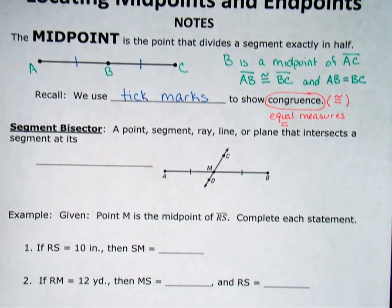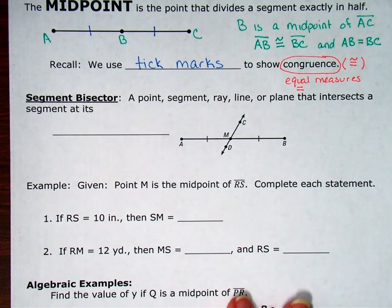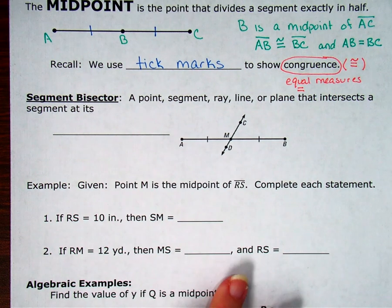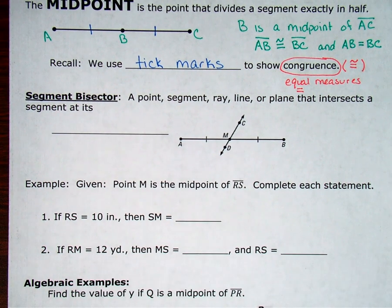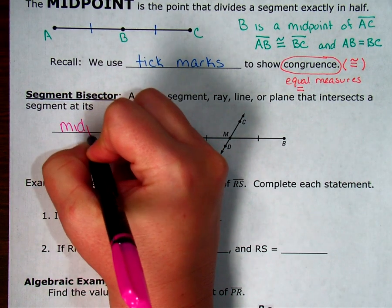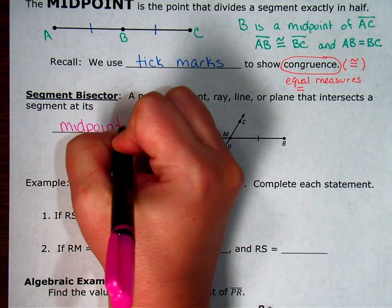Alright, so the next word that's going to be new to us is segment bisector. We'll use bisector in a few different ways this year. But a segment bisector is something, a point, segment, ray, line, plane, anything that intersects a segment at its midpoint.